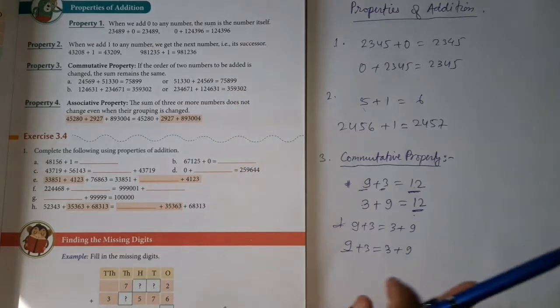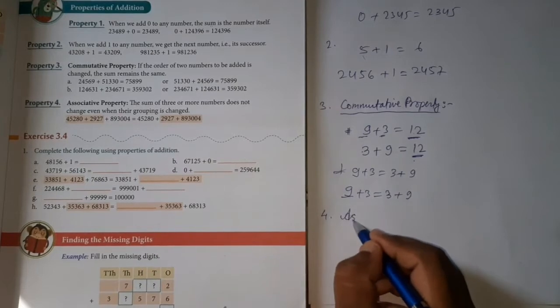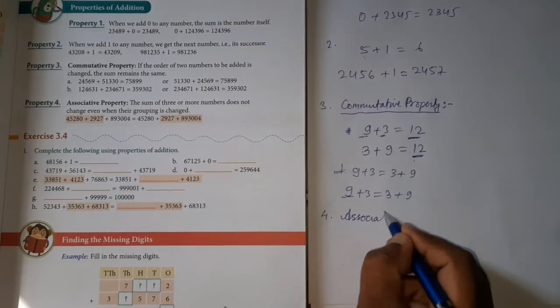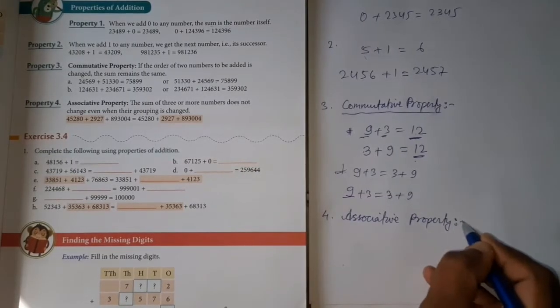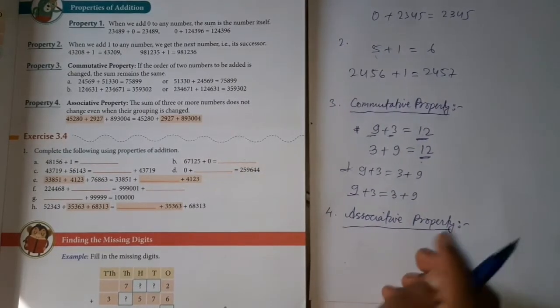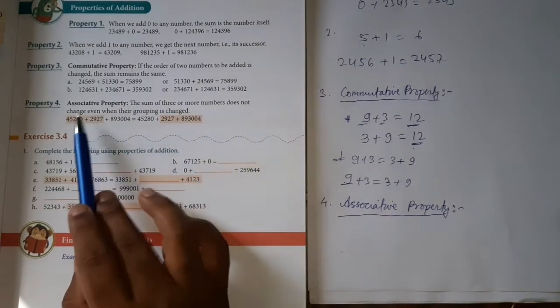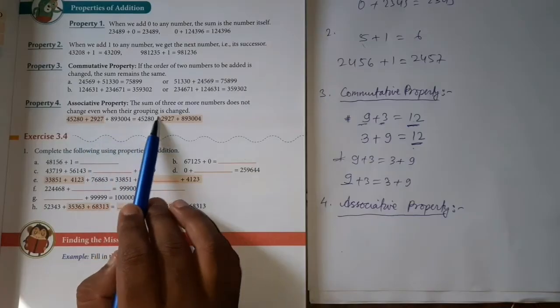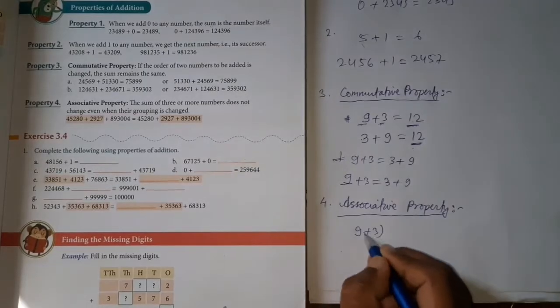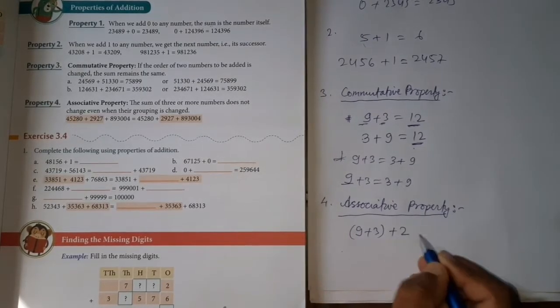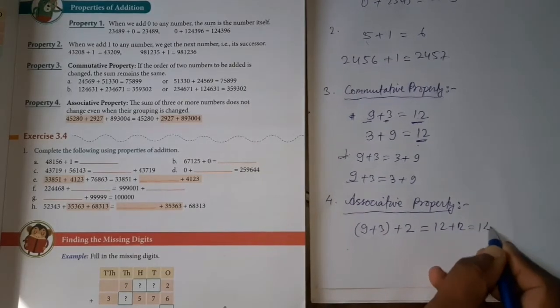The other one you have is associative property. Associative property means what? If the sum of three or more numbers does not change even when their grouping is changed, what do you mean? Nine plus three is twelve, plus two is fourteen. Grouping: first I group you both, then I group you both. If I group you both, there will be no changes.